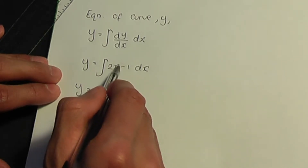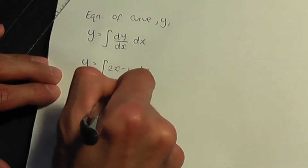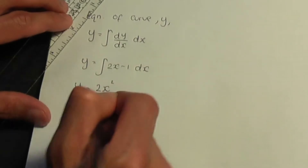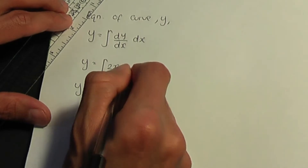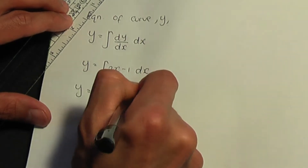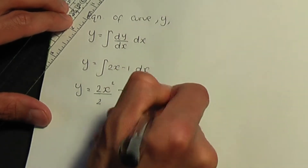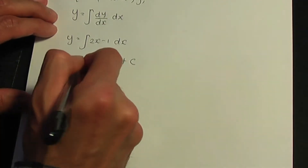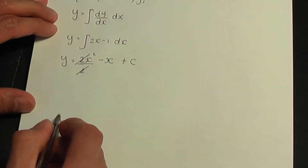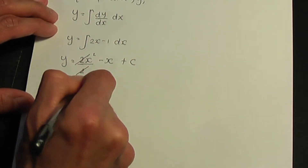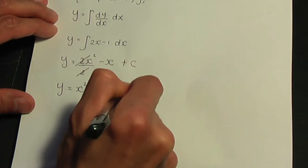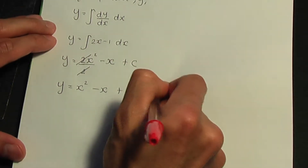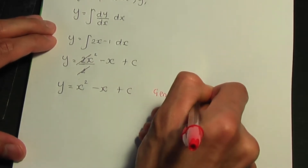Integrating 2x: add 1 to the power to get 2, then divide by 2. Integrating minus 1 gives minus 1x. Don't forget to add c since this is an indefinite integral. Cancelling the 2s gives y equals x squared minus x plus c. This is our general solution.